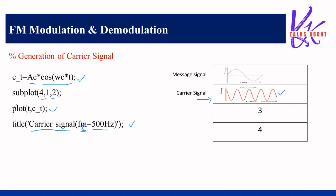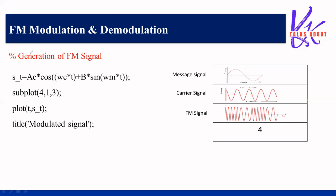Now we generate the frequency modulated wave. The standard equation is s(t) = Ac·cos(wc·t + β·sin(wm·t)). We plot this in the third row, position (4,1,3). The title will display 'Modulated Signal', showing the frequency modulated wave in the third row of the matrix.